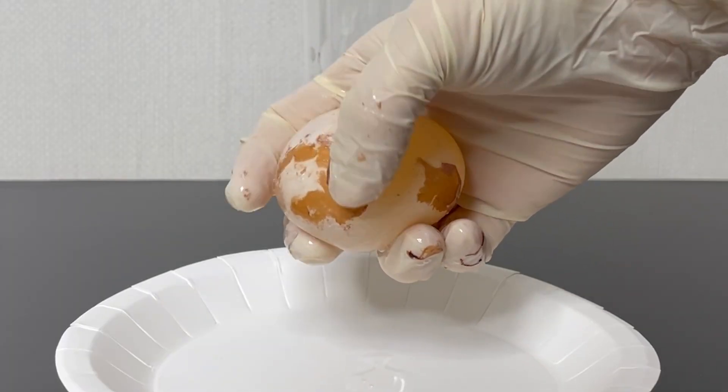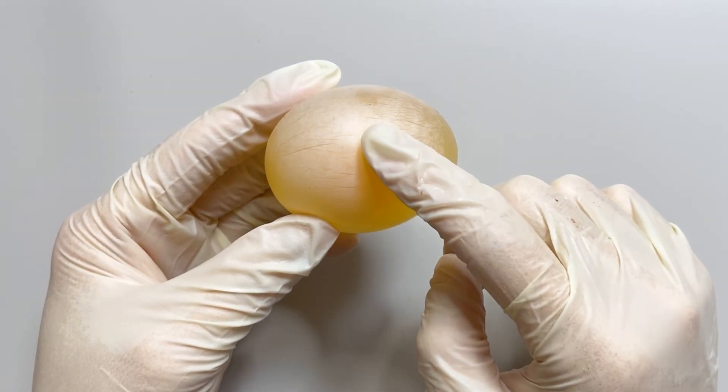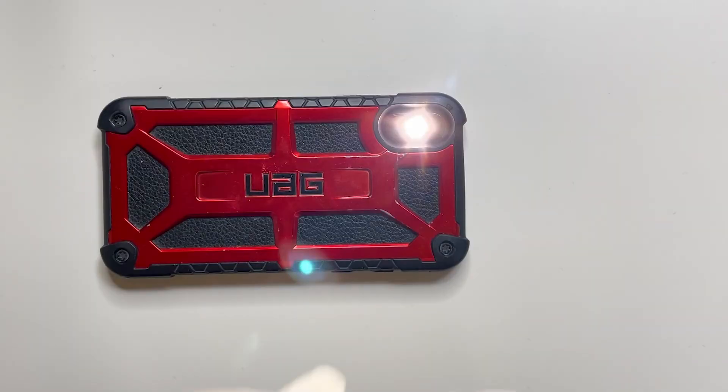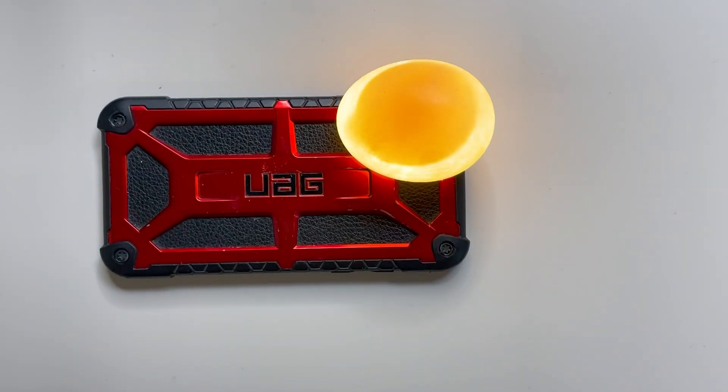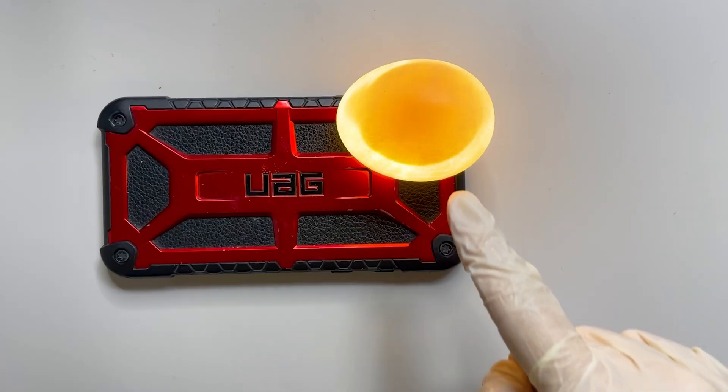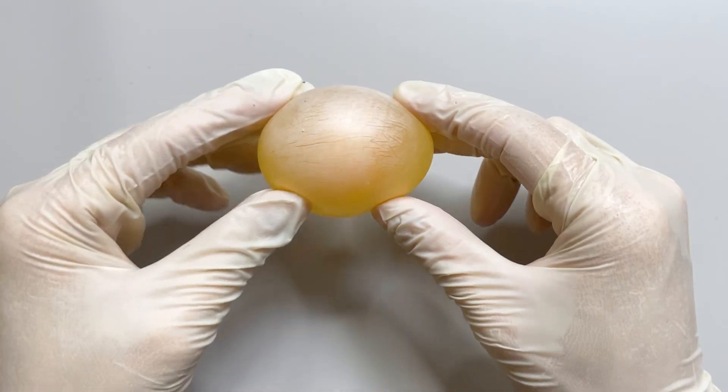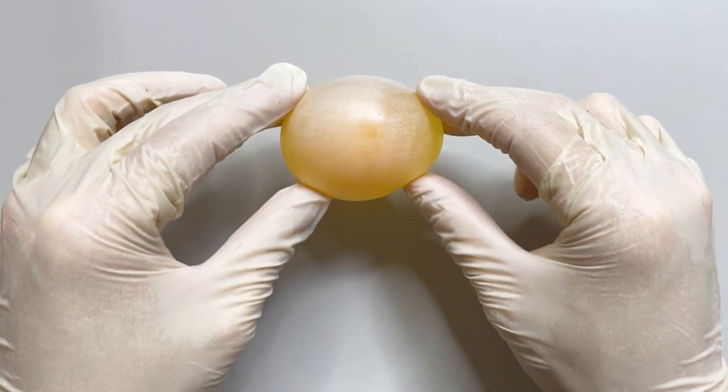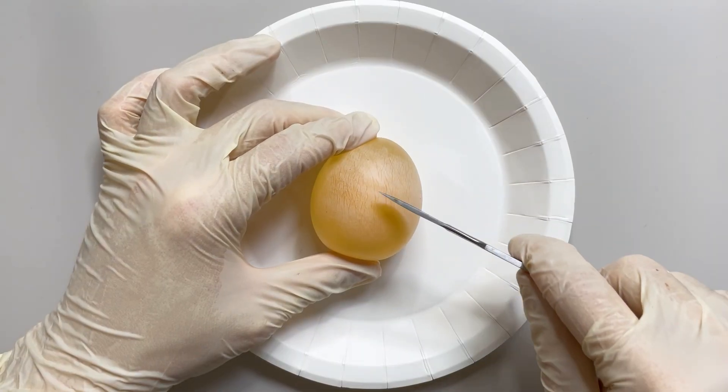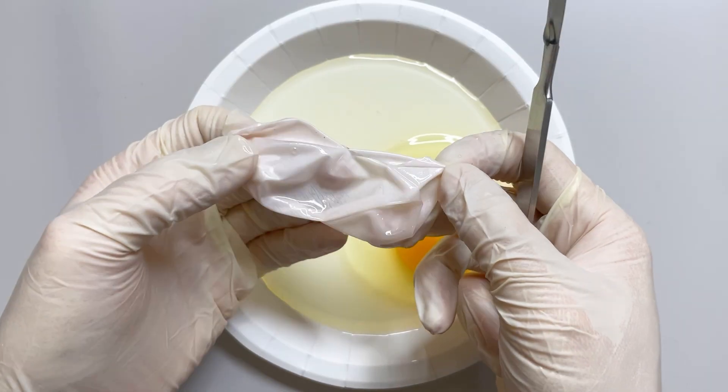If you carefully peel off the shell, you can see this structure. When you shine light on it, you can see the yolk. The reason the egg doesn't spill out even when the shell dissolves is because there is a double layer of eggshell membranes inside the shell.